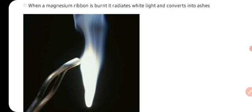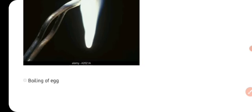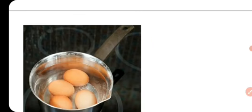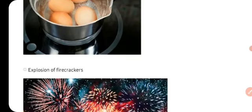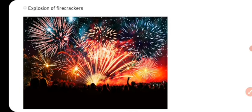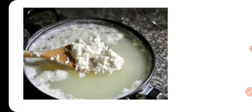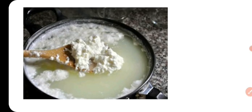Chemical change kabhi bhi reversible nahi hota hai — yeh irreversible hota hai, matlab ki yeh waapas reverse nahi ho sakta hai. Boiling of egg — egg ko jab aap boil karte hai, to egg ke andar chemical changes hoti hai. Explosion of fire cracker — fire cracker ka explosion bhi chemical change ka hi example hai. Curdling of milk — milk jo hai woh dahi mein convert hoti hai, to yeh bhi ek chemical change ka example hai. Doodh jo hai woh bilkul alag ek cheez hoti hai, aur dahi bilkul alag — ismein doodh se bilkul naya substance ban jaata hai jisko dahi kehte hai, to yeh bhi ek chemical change hai.